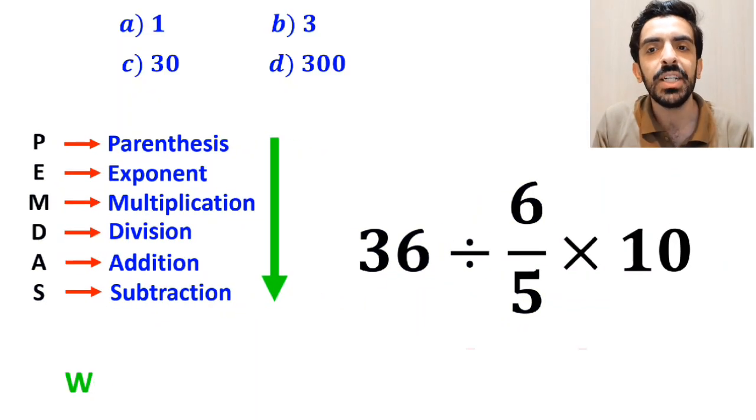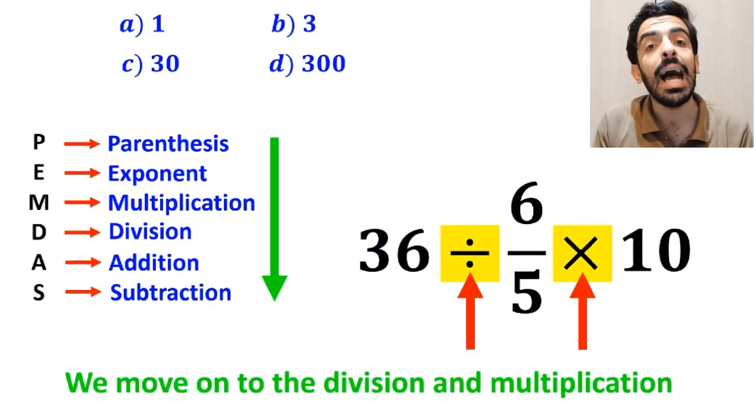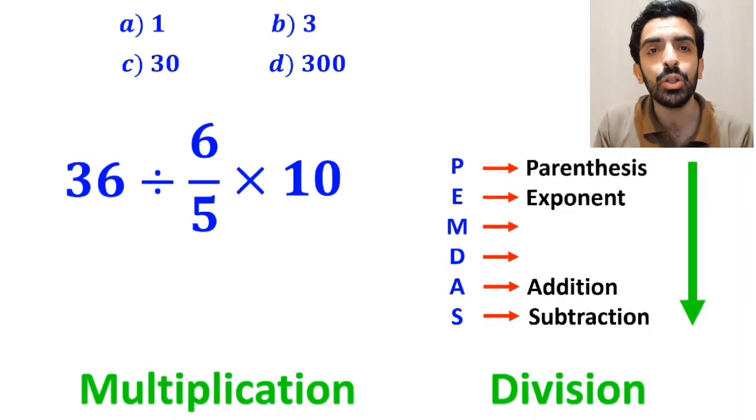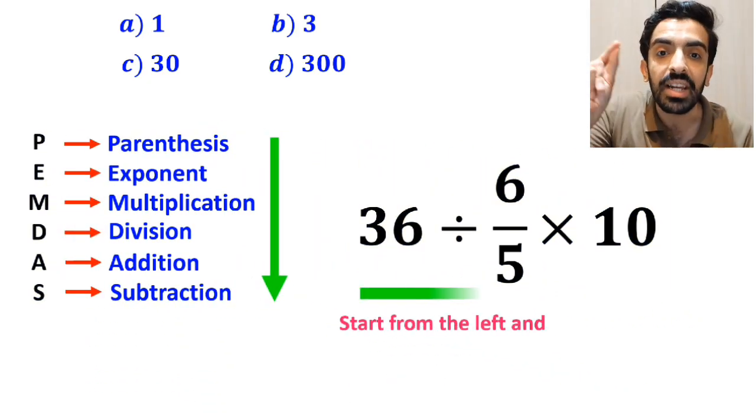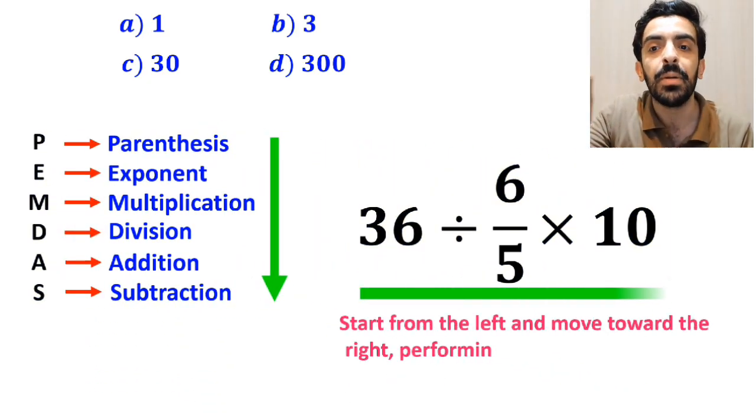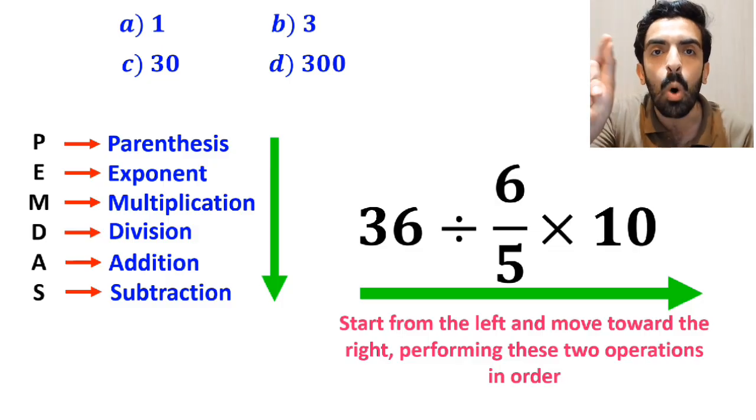In the next step, we need to move on to the division and multiplication. However, it's very important to note that multiplication and division have exactly the same level of priority in the PEMDAS rule. In this situation, the best approach is to start from the left and move toward the right, performing these two operations in order.